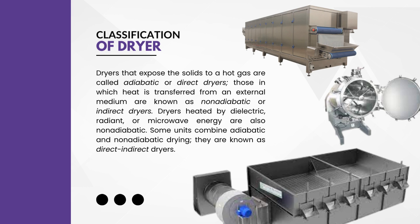A third method is the use of a microwave oven to heat up the water molecules in the clothes and make them evaporate. This is also like using a non-adiabatic or indirect dryer, because the microwave energy is not in direct contact with the clothes but heats them from inside. For example, if you use hot air and a metal rod both at the same time, this is called a direct-indirect dryer because it uses both adiabatic and non-adiabatic ways of drying.